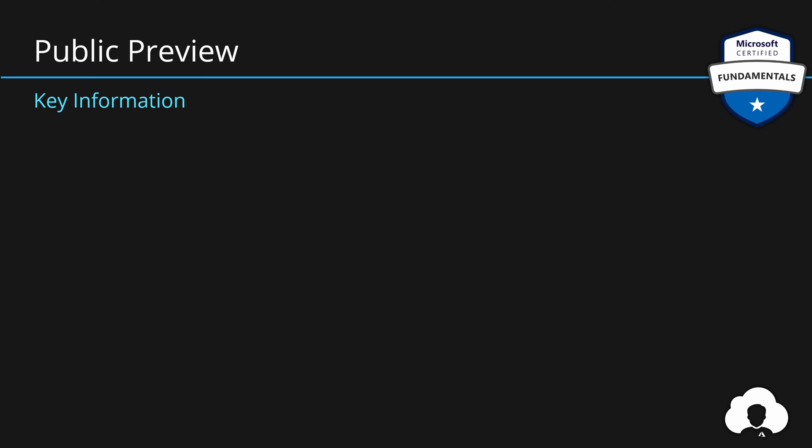Certain things to note when it comes to public preview: because public preview is a beta service, it has certain limitations and key things you need to remember. First of all, very often, if not always, public preview services are out of scope for service level agreements. So using them for production workloads is not recommended. Additionally, some services in preview are not covered by customer support.